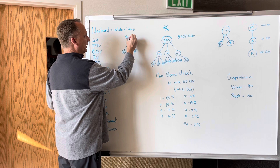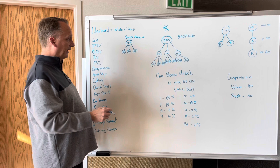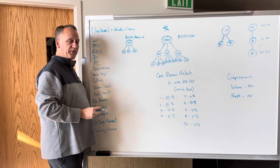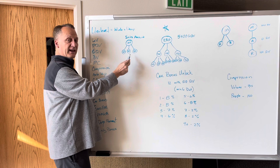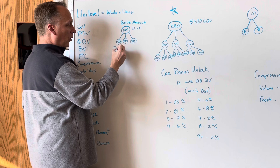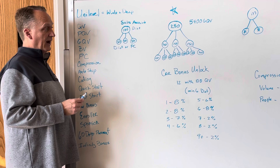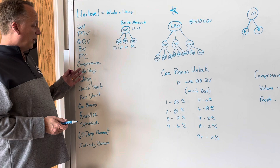The sales associate rank is the building block of Longevity — you want to build as many as possible. To become a sales associate, you need 150 QV on your own personal account and you need to bring in three people who each have 50 QV. The sales associate themselves must be a distributor, but those three people underneath can be either distributors or preferred customers — it doesn't matter which.